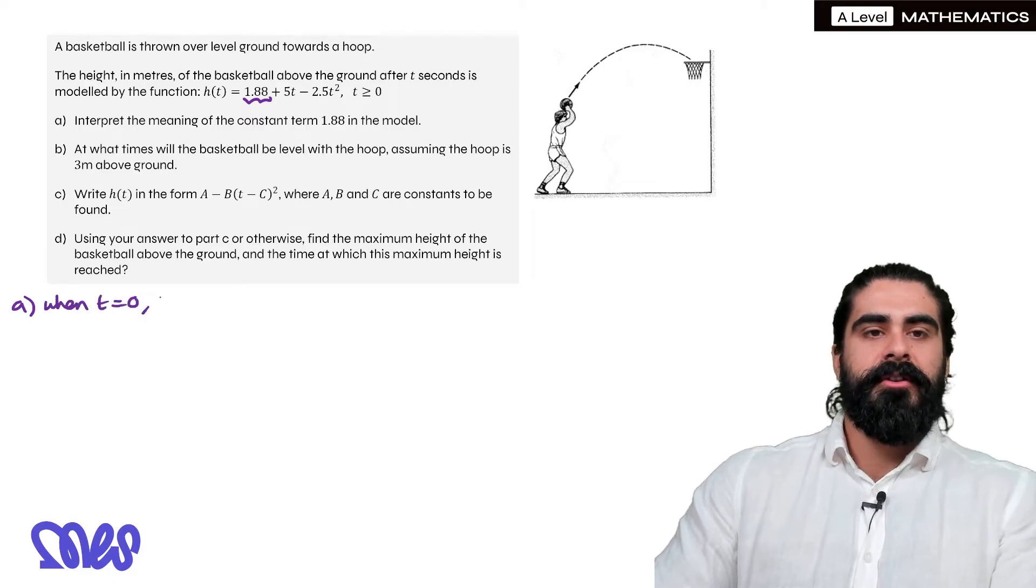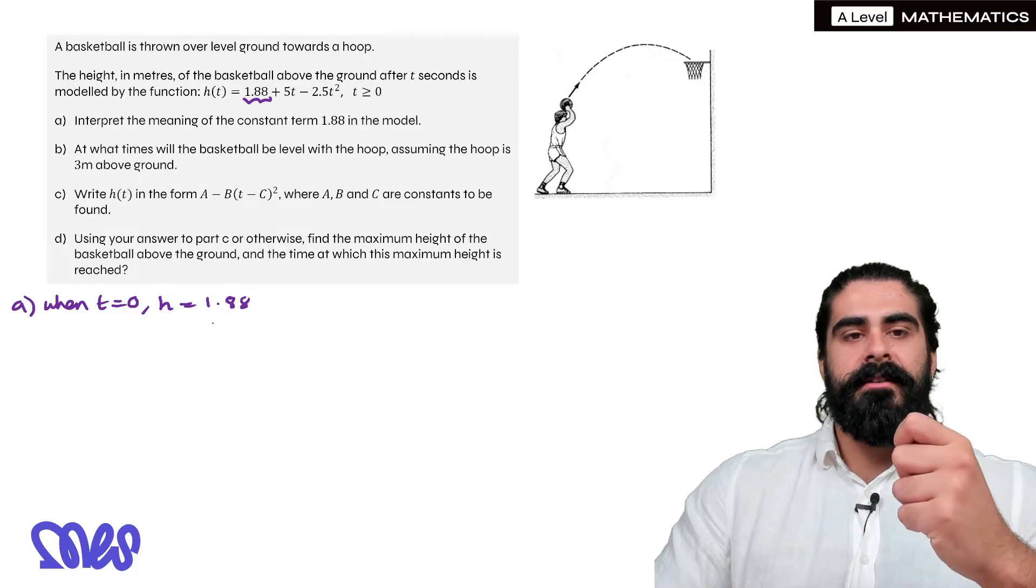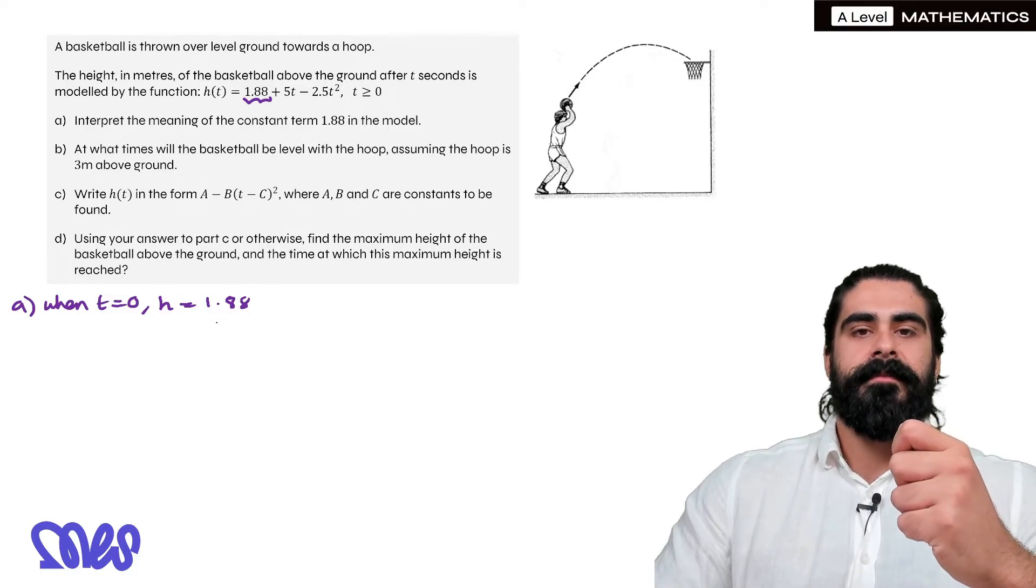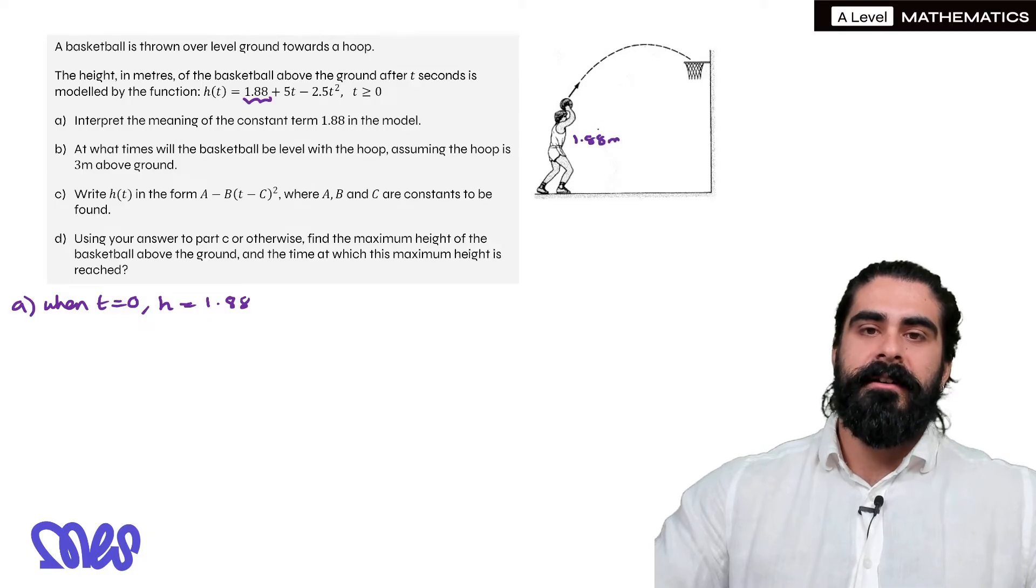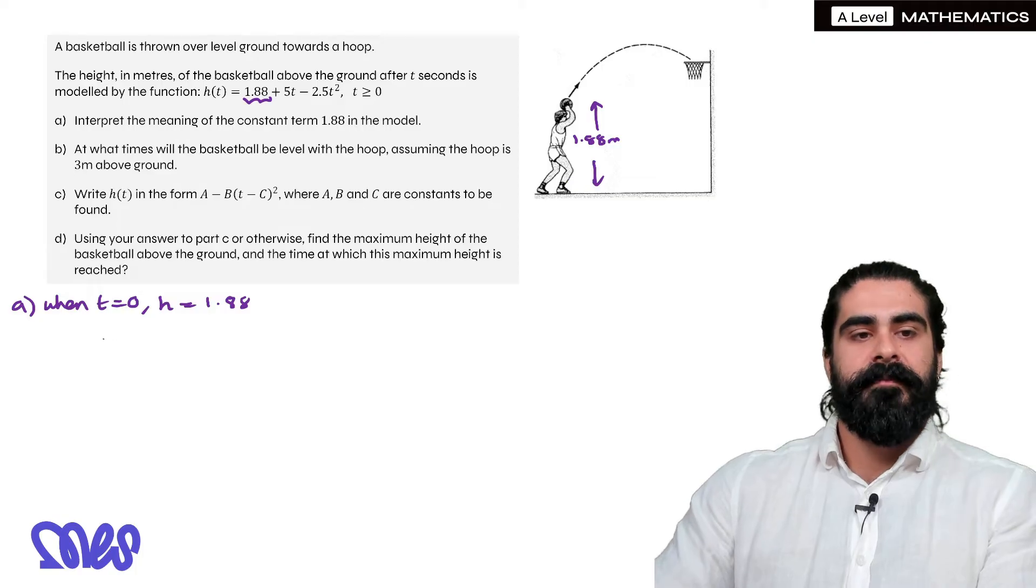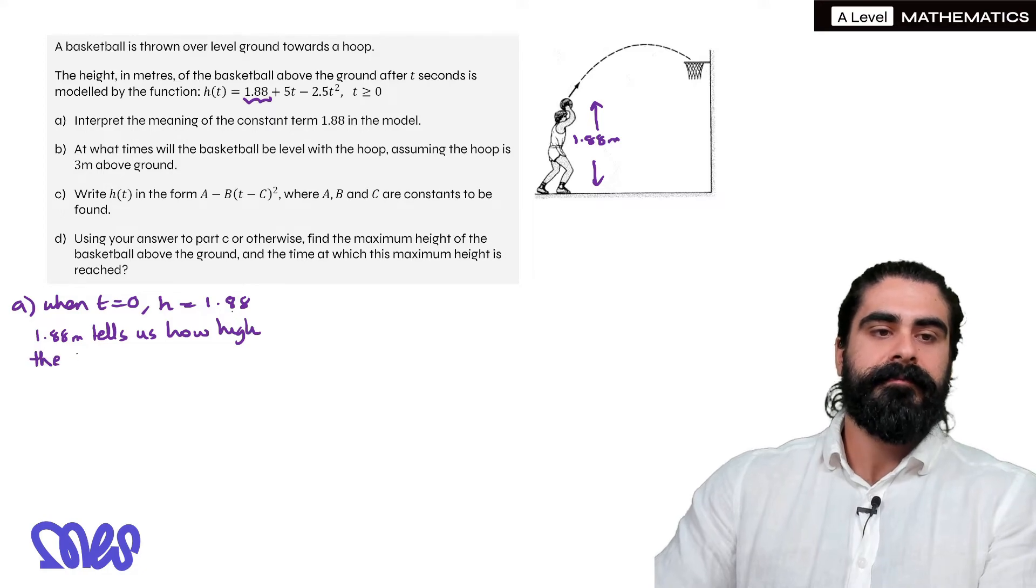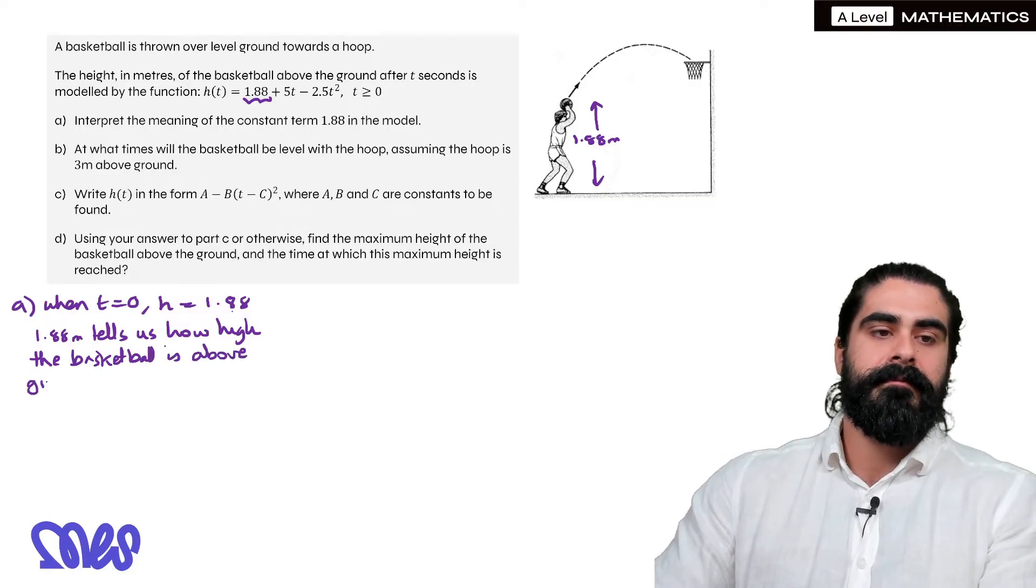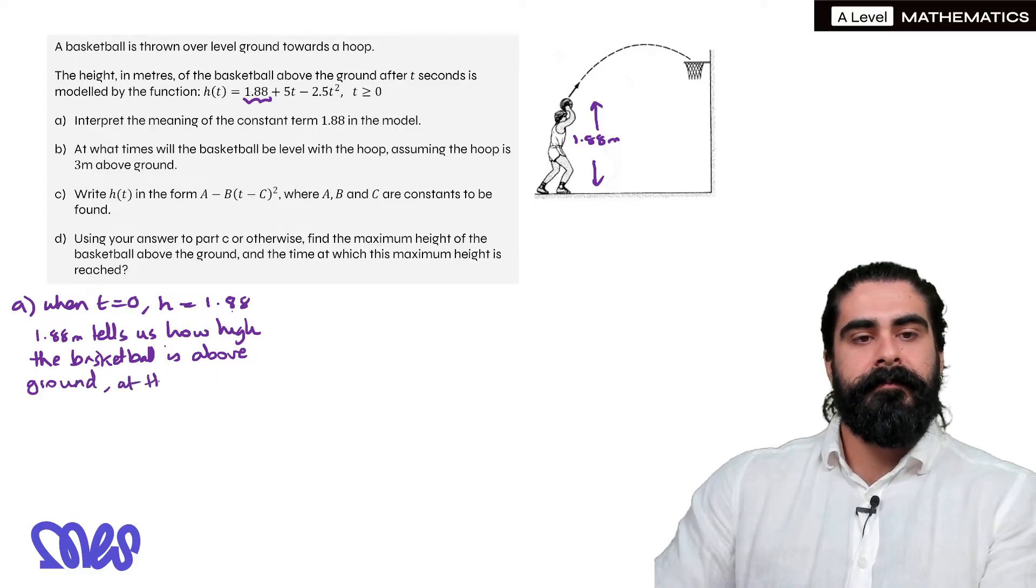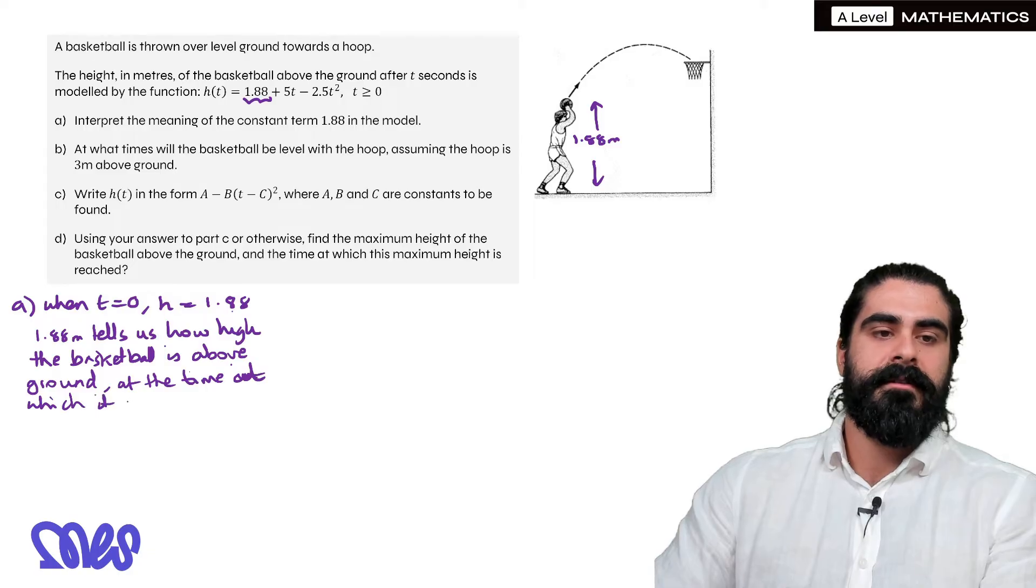So when t is zero you get h equals 1.88. So that is telling us that 1.88 tells us the height of the basketball above the ground at the time when the basketball was initially thrown. Yeah so in terms of this diagram the 1.88 tells you how high is the basketball above ground at the time when the basketball is thrown. So 1.88 meters tells us how high the basketball is above ground at the time at which it is thrown.